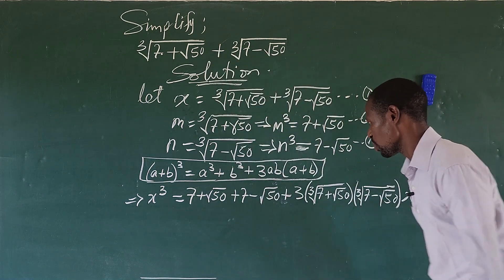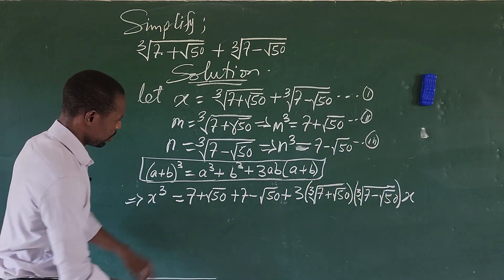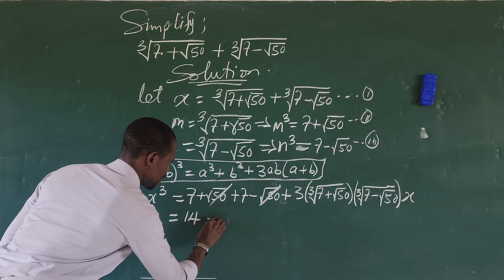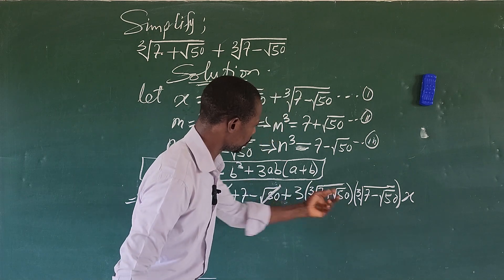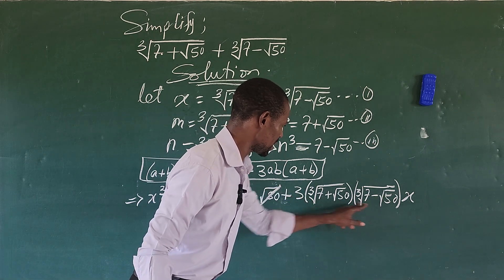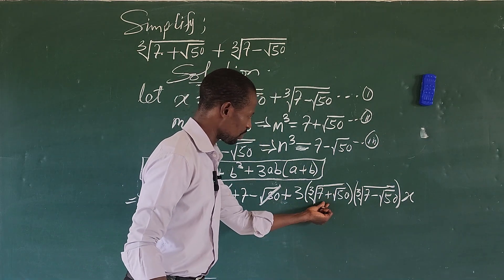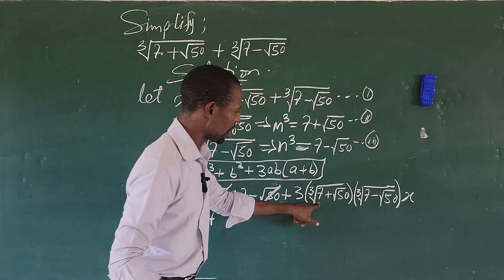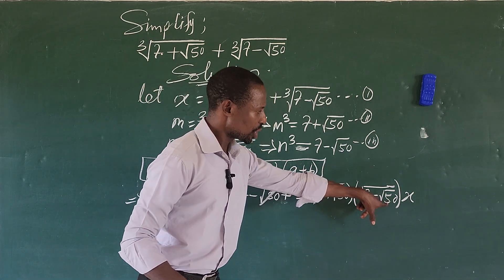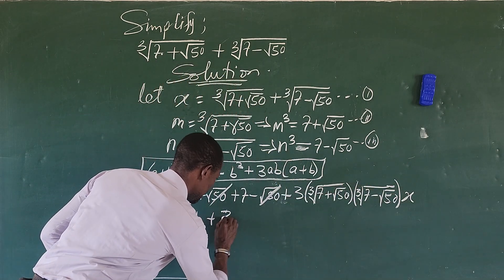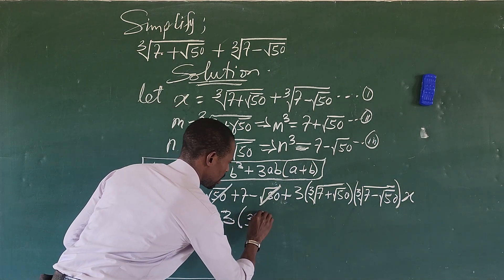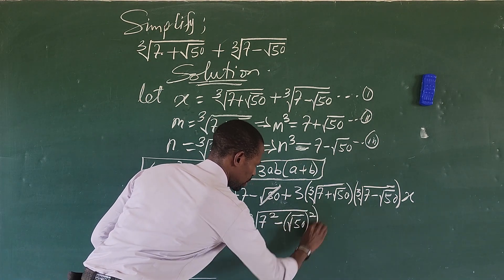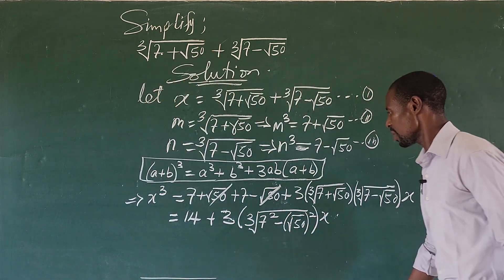Looking at this, we cannot add the two cube roots directly. The terms inside are 7 + √50 and 7 − √50 — they are conjugates. So multiplying them gives 7² − (√50)², which equals 49 − 50. So x³ = 14 + 3·∛(49 − 50)·x.